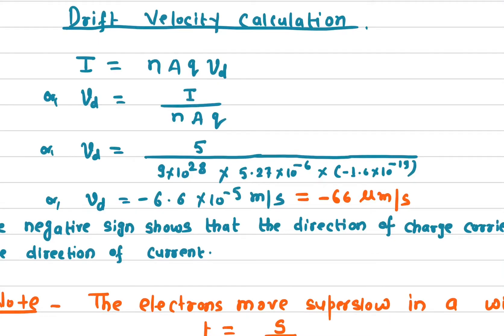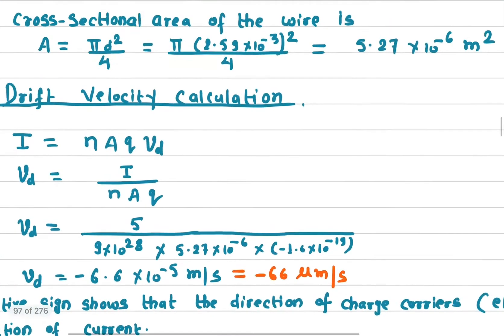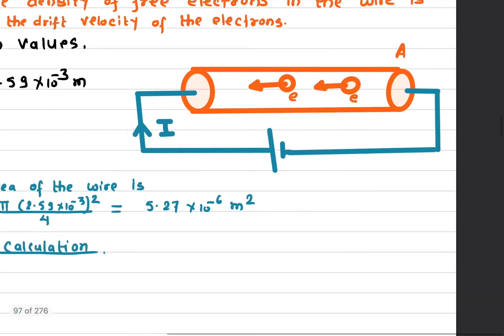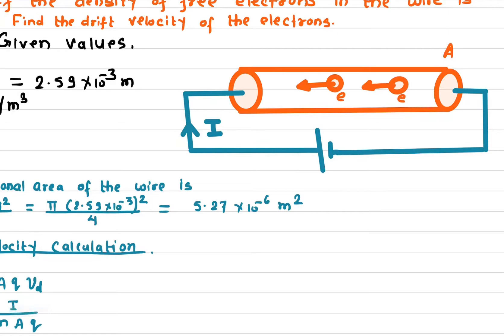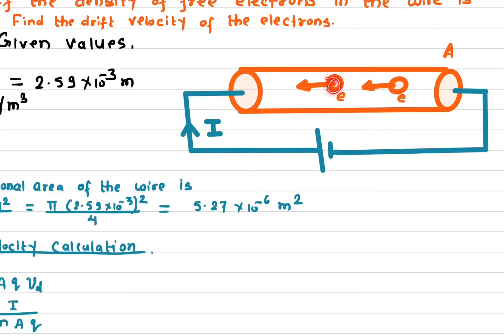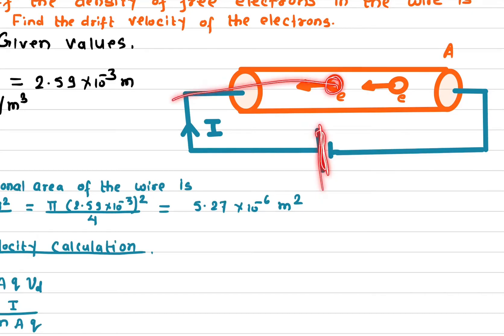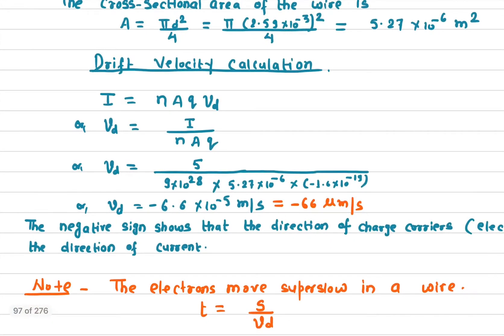What does the negative sign tell us? The negative sign simply means the charge carriers are electrons, which move opposite to the direction of conventional current. Looking at the diagram, the current direction is always from positive to negative terminal, but if the charge carriers are electrons, the electrons move from negative to positive terminal — because the positive terminal attracts the electrons.